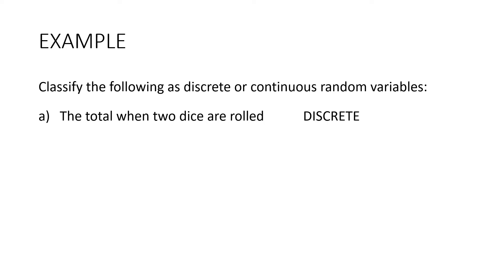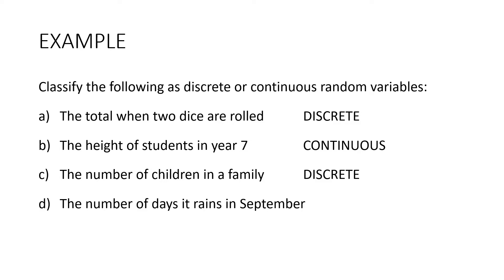How about the heights of students in Year 7? This one's continuous. Can you tell why? We don't have discrete numbers. So we can have decimals, for instance. Somebody could be 134.6 centimeters tall, depending on how accurate you want to get. How about the number of children in a family? That one is discrete data, because we can't have half a child or a quarter of a child. And the number of days it rains in September? That's also discrete data, because it's whole numbers.